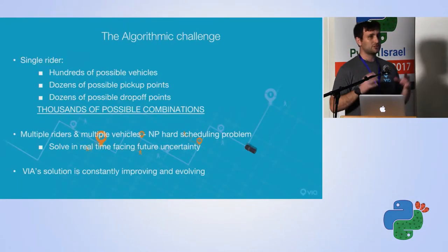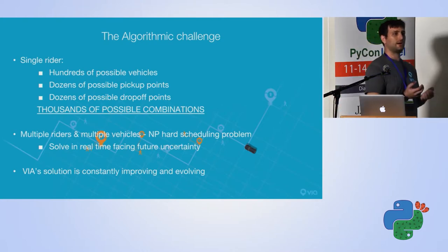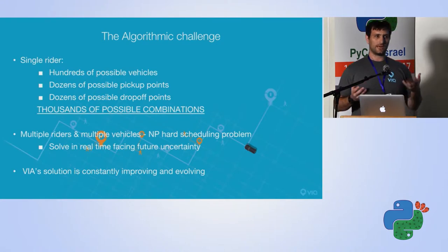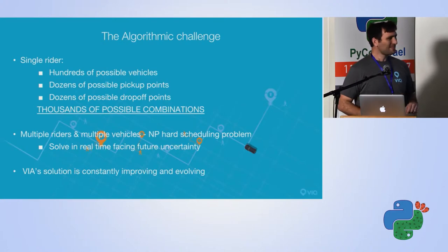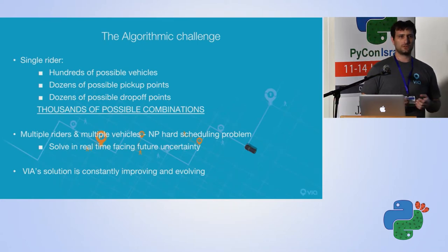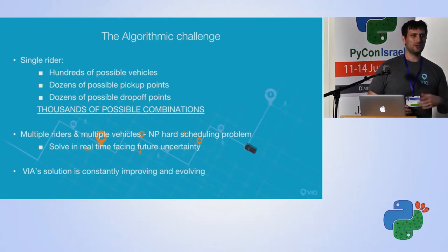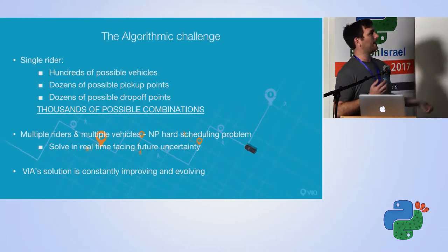I'll discuss the algorithmic challenge that we face. If you think of it for a single rider, there are hundreds of possible vehicles across the city, and dozens of possible pickup points because we allow the rider to walk a certain distance, and dozens of possible drop-offs. That creates thousands of possible combinations for a single rider. When we're trying to aggregate multiple riders over multiple vehicles, this becomes an NP-hard problem that we have to solve in real time. Especially once we take uncertainty in speeds throughout the city into account. The point is to convince you that it's a difficult problem. VIA's solution is constantly improving and evolving based on all sorts of feedback and our own insights.